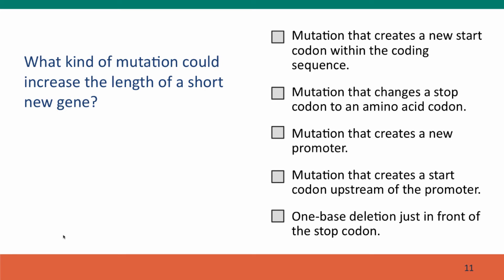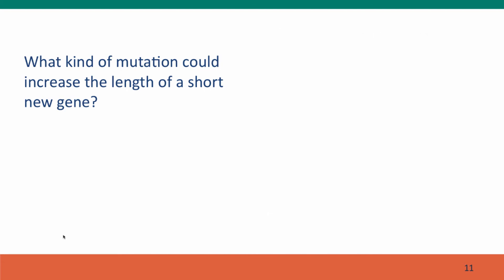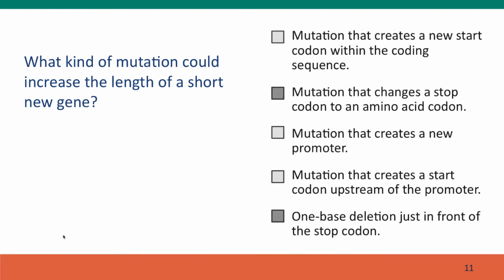So what kind of mutation could increase the length of a short new gene? The answers are: mutations that change the stop codon of the gene to an amino acid codon are going to make the reading frame longer, because the reading frame is defined by the stop codon that ends it. Also, a deletion in front of the stop codon won't change the sequence of the codon itself, but it will stop it from functioning as a stop codon because it will now be in the wrong reading frame — it won't be recognized as a stop codon anymore.